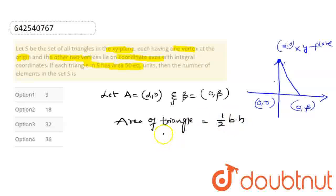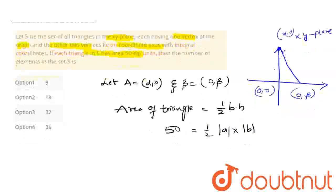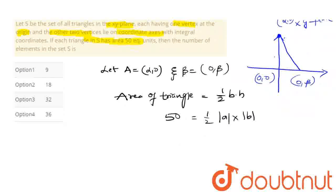Here we can see the area of the triangle is 50 square units. So half times modulus of A times modulus of B. The next step is 100 square units equals modulus of A times modulus of B.